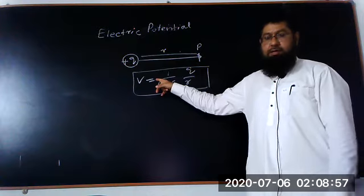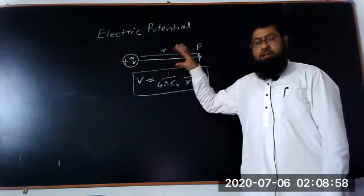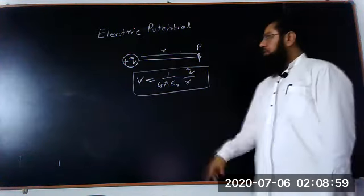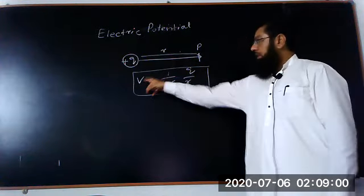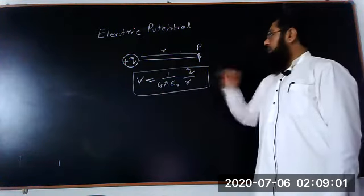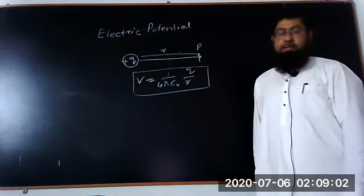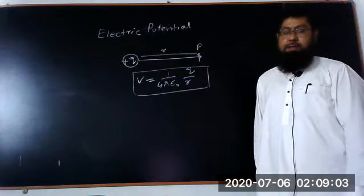This potential is a scalar quantity. Therefore, it has no direction. It has only magnitude. This is the electrical potential at point P.